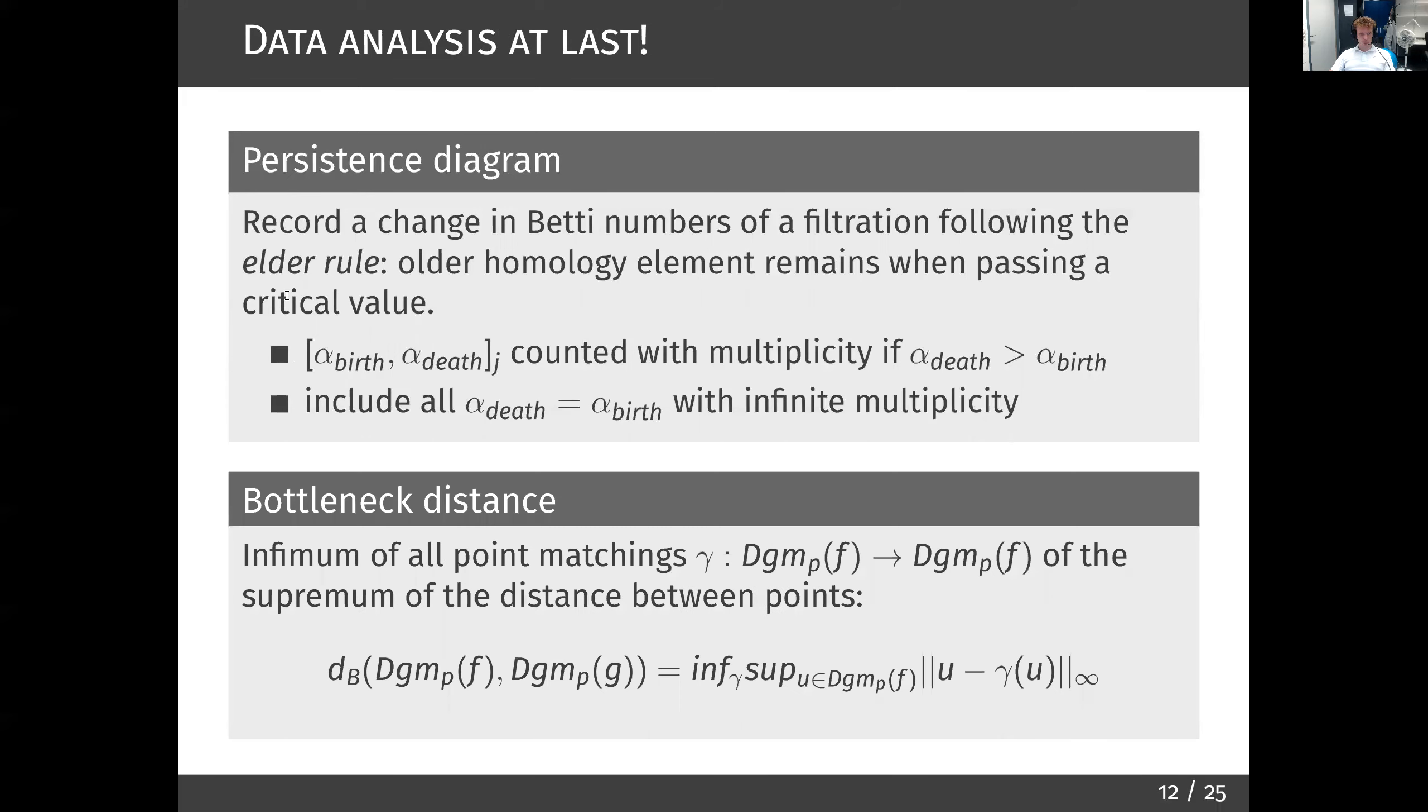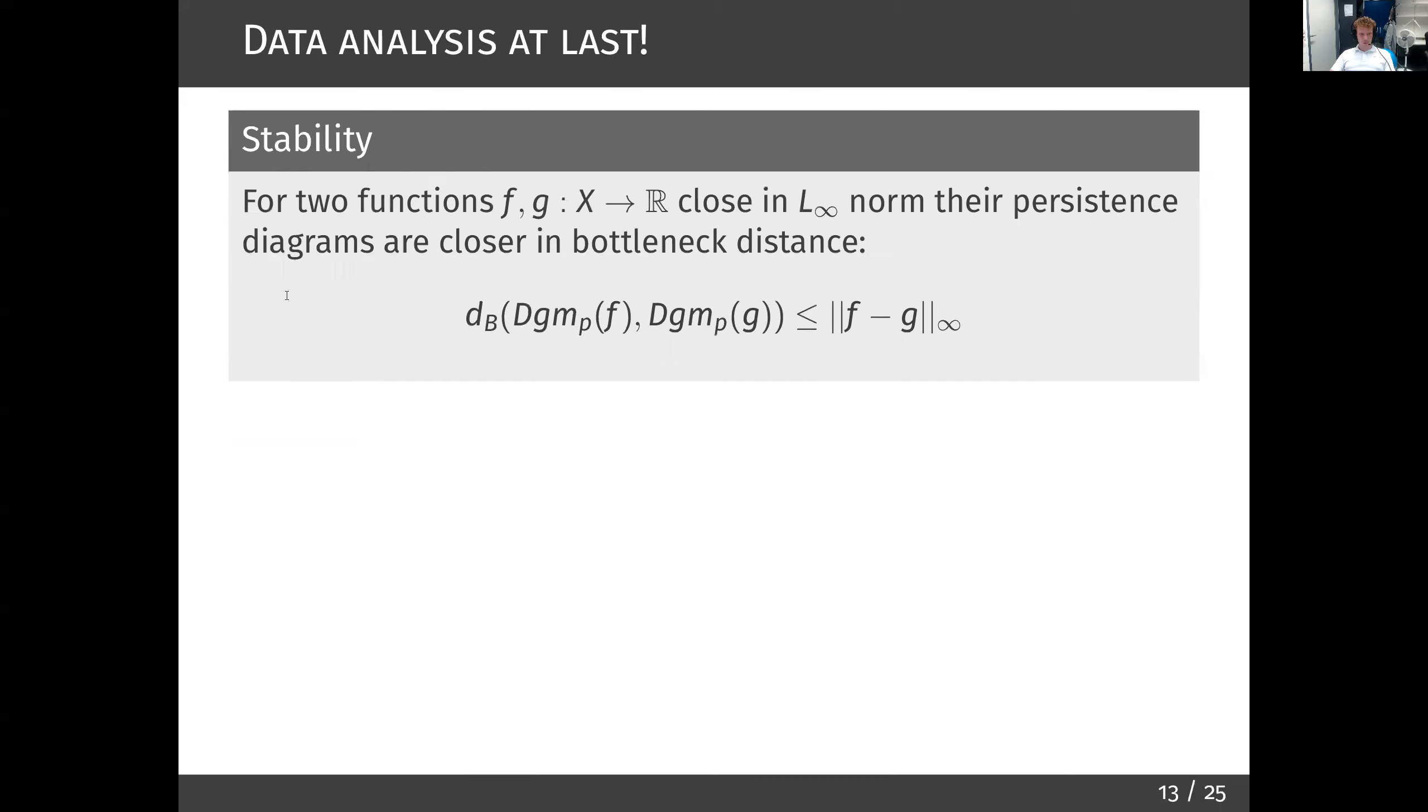First, we want to quantify distance between diagrams by optimally matching points of two diagrams and respecting the dimension of the homology birth death intervals. Using this distance, we can show that persistence diagrams of two functions in bottleneck distance are closer than the functions in L infinity norm. This is very useful, because adding some noise to one of the functions changes their diagram in a controlled way. There are other forms of stability theorems in persistence, and in fact, this research is ongoing.